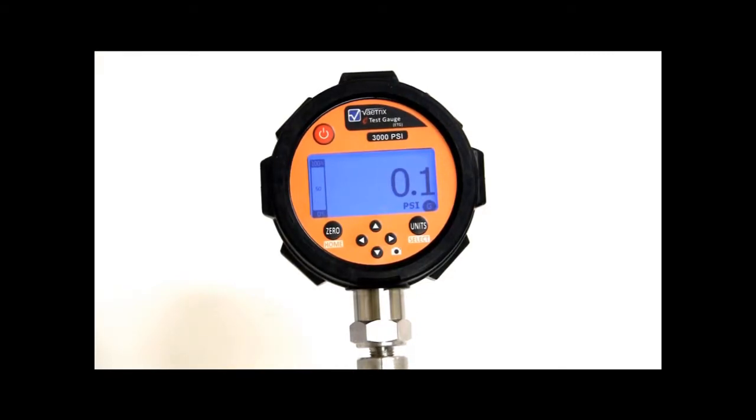So right now we're in measure mode. You're measuring live pressure. We have the bar graph which tells you where you're at per the range. So we're at zero PSI on a 3000 PSI gauge. And we have the units.